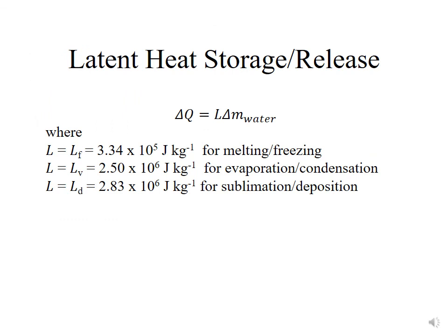To summarize latent heat storage, we use the quantity delta Q, where Q is energy storage, and delta Q equals L times the change in the mass of water going through the phase change: ΔQ = L · ΔM_water. The value of L differs depending on the type of phase change — LF for melting and freezing, LV for evaporation and condensation, and LD for sublimation and deposition. The sign on the latent heat storage or release will depend upon the direction of the phase change.